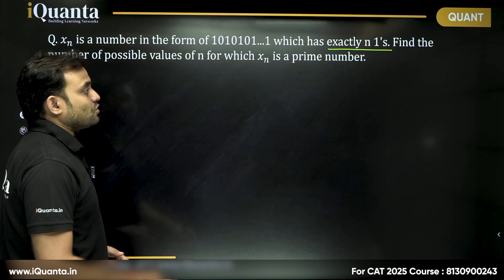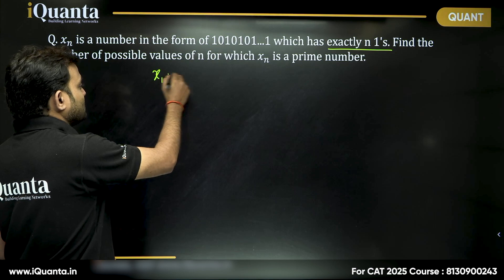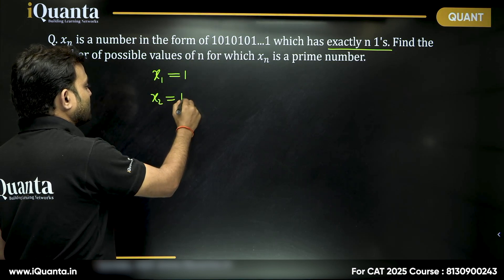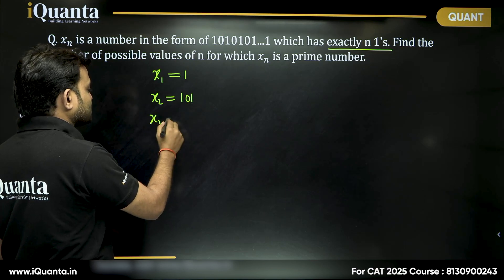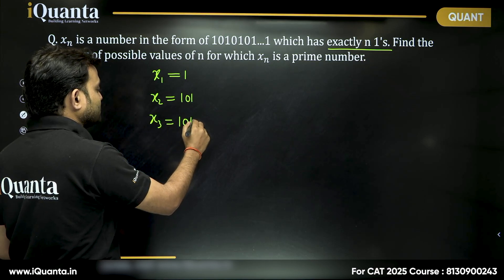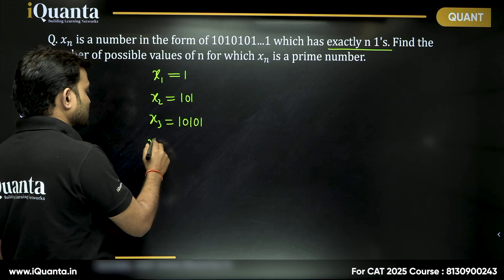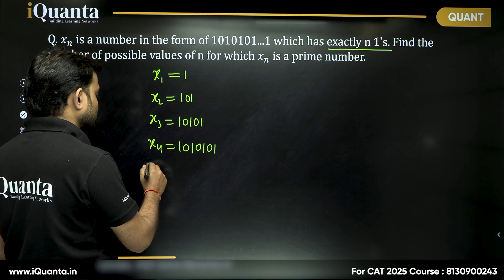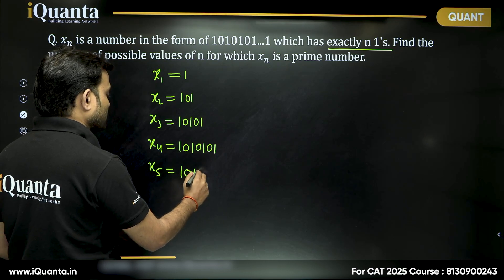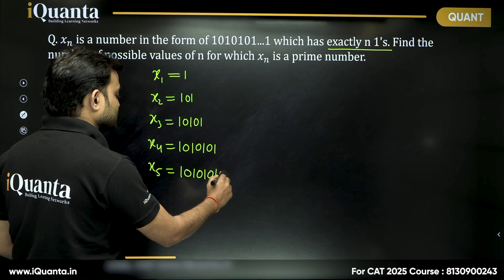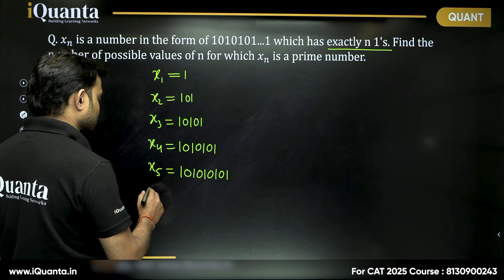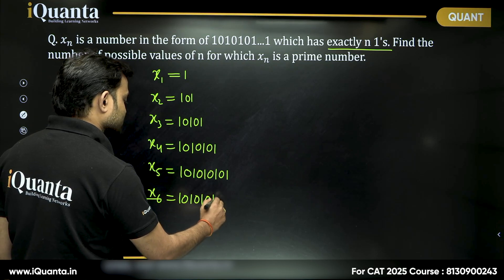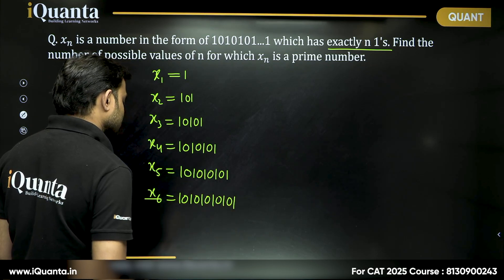If there is only 1, x_1 will be 1. x_2 will be 101. x_3 will be 10101. x_4 will be 1010101. x_5 will be 101010101. And x_6 will be 10101010101 — that's 6 ones. The sequence goes on like this.